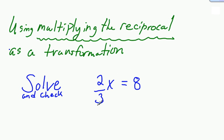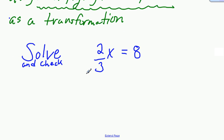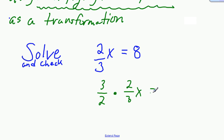Let's look at one with 2 thirds x equals 8 — adding a little more degree of difficulty. On this one, I need to multiply by the reciprocal of 2 thirds, which would be 3 halves. So I'm going to multiply 3 halves by 2 thirds x, and I'll need to multiply 3 halves by 8.